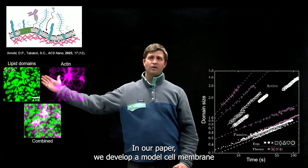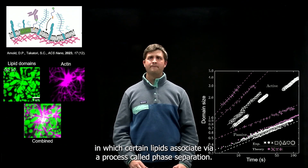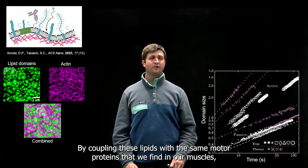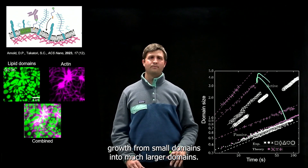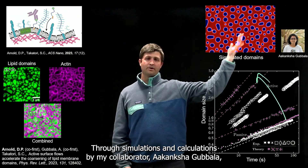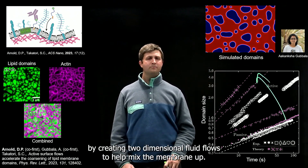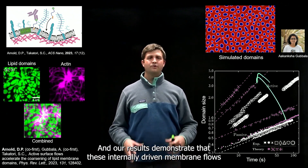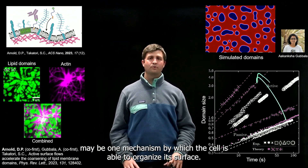In our paper, we develop a model cell membrane in which certain lipids associate via a process called phase separation. By coupling these lipids with the same motor proteins that we find in our muscles, we are able to accelerate the rate of lipid domain growth from small domains into much larger domains. Through simulations and calculations by my collaborator Akanksha Gabbala, we show that these motor proteins work by creating two-dimensional fluid flows to help mix the membrane up, and our results demonstrate that these internally driven membrane flows may be one mechanism by which the cell is able to organize its surface.